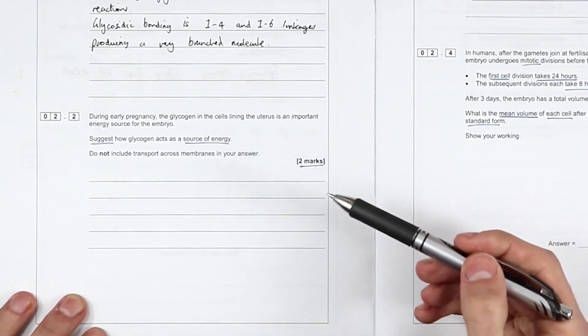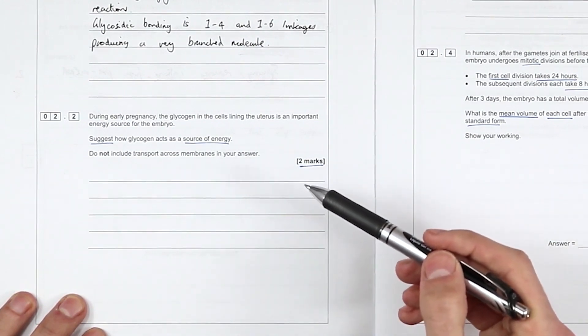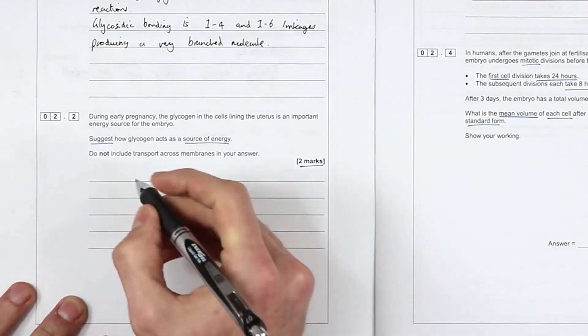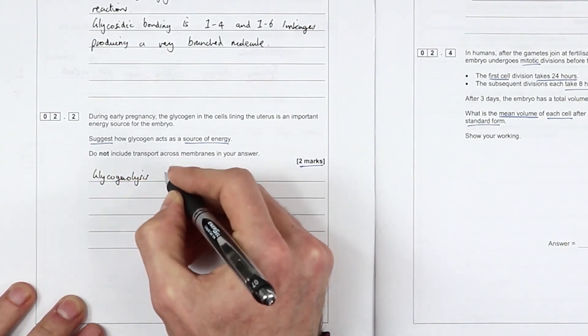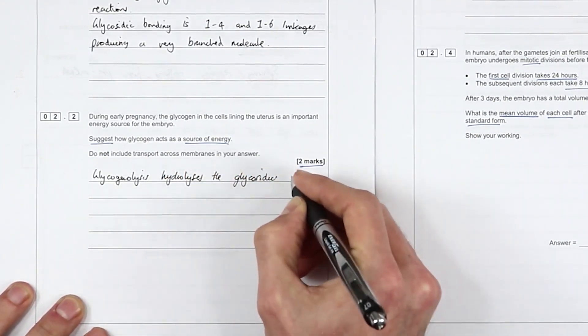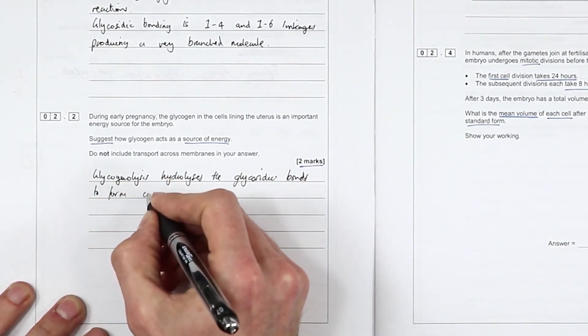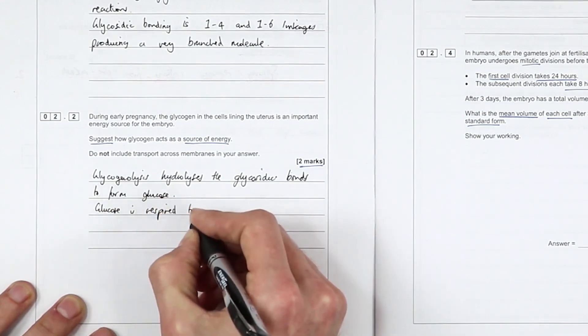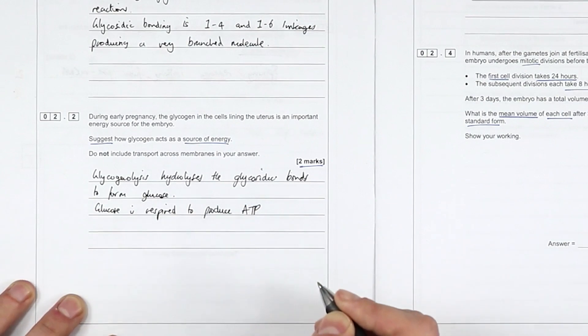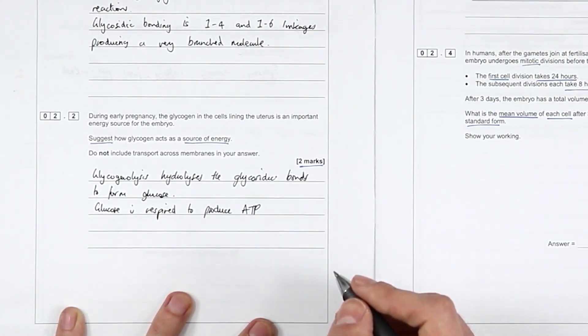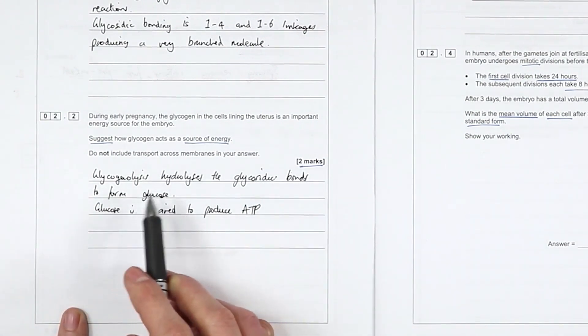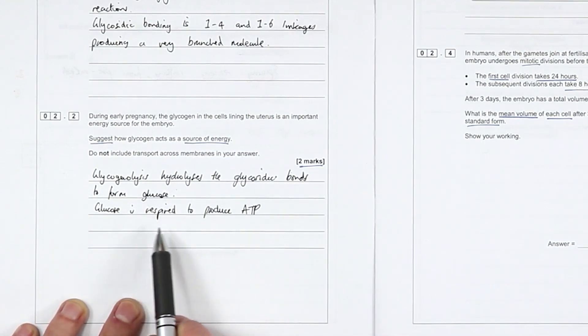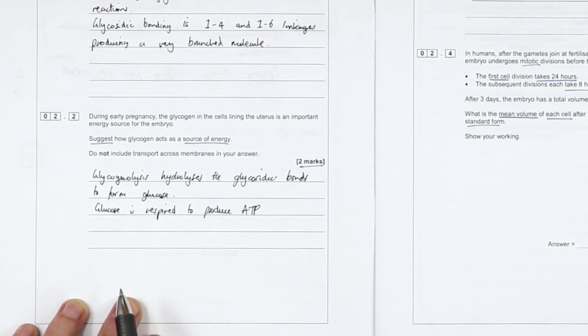Well, this is paper one, which means they're not really looking for year two key terms, but we can say glycogenolysis will hydrolyze the glycosidic bonds to make glucose, which is respired to form ATP. So glycogenolysis hydrolyzes the glycosidic bonds to form glucose. We could maybe put, oh, I've got hydrolysis in the hydrolyzes. We don't have to say hydrolysis reaction. Glucose is respired to produce ATP. I think that's fine.